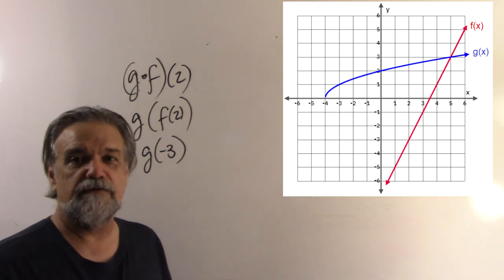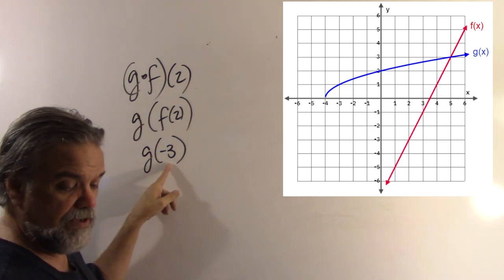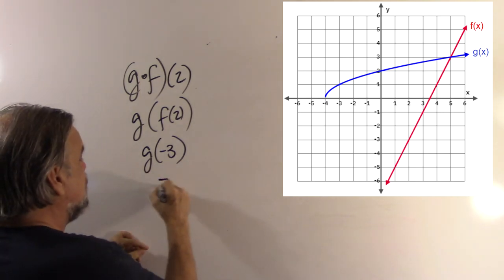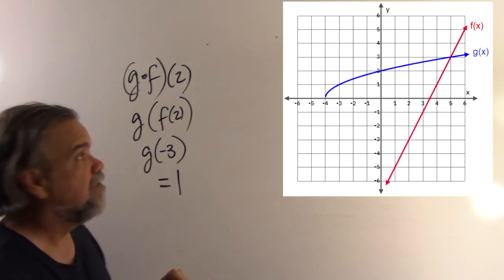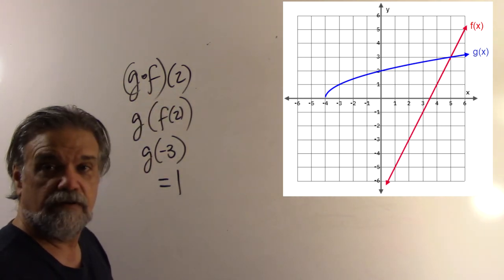Now, we got to look at our other function, the blue function, and see when x is -3, what is y going to be? And that looks like it's going to be equal to 1. So, the answer to g(f(2)) is 1.